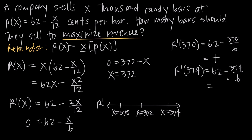When we do this arithmetic, we get a negative value for x equals 374. So to the left of x equals 372, the derivative is positive meaning the original function is increasing. To the right of x equals 372, the derivative is negative meaning the function is decreasing. With increasing on the left and decreasing on the right, x equals 372 is a local maximum. The first derivative test has proven that x equals 372 maximizes revenue.